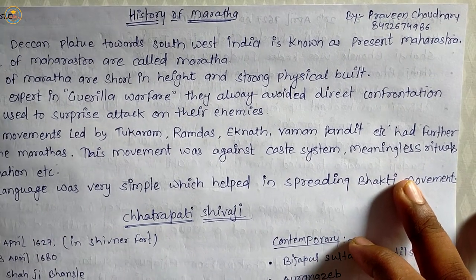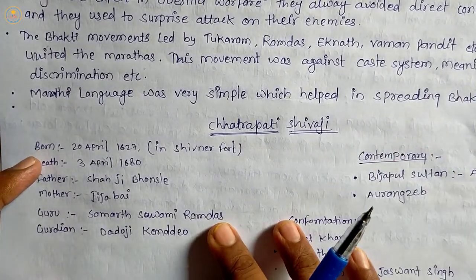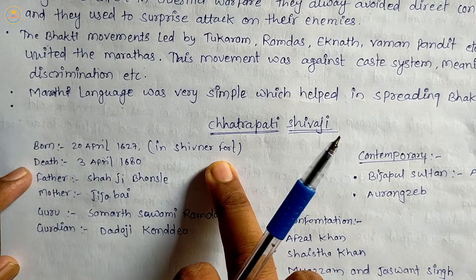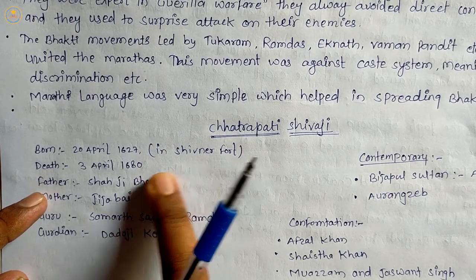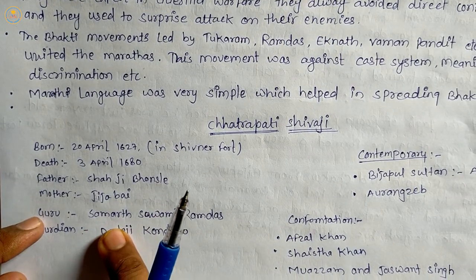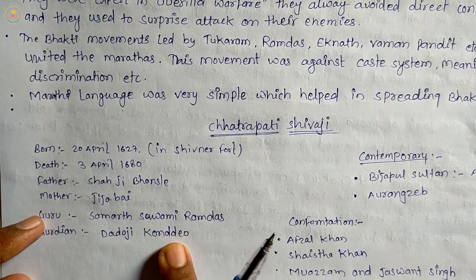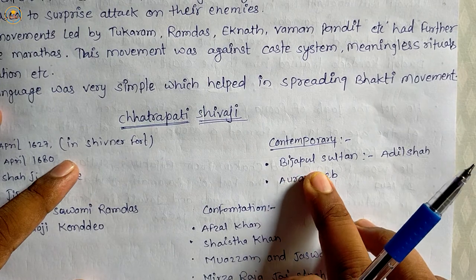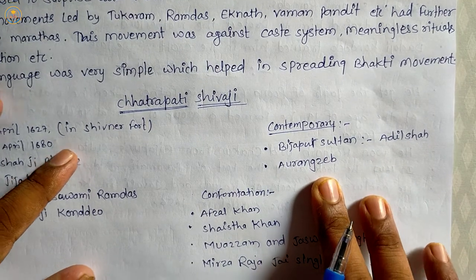Chhatrapati Shivaji was born on 20 April 1627 in Shivneri Fort. He died on 3rd April 1680. His father was named Shaji Bhosle, his mother was named Jijabai, his guru was Samarth Swami Ramdas, and his guardian was Dadoji Kondadev. The contemporaries of Chhatrapati Shivaji were Bijapur Sultan Adil Shah and Aurangzeb.